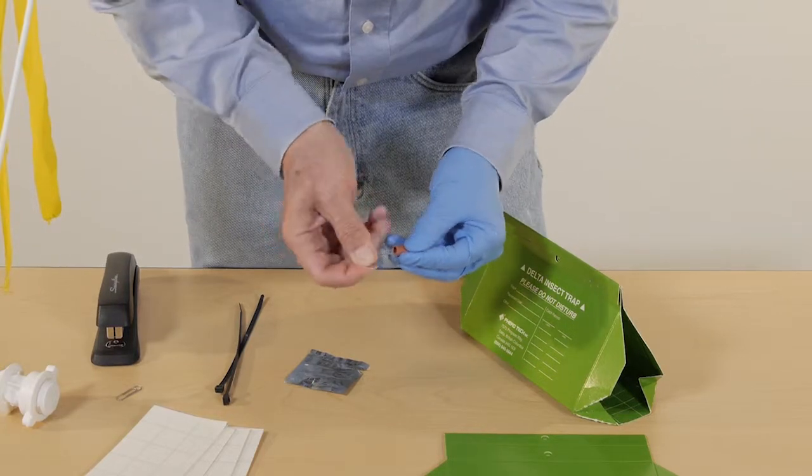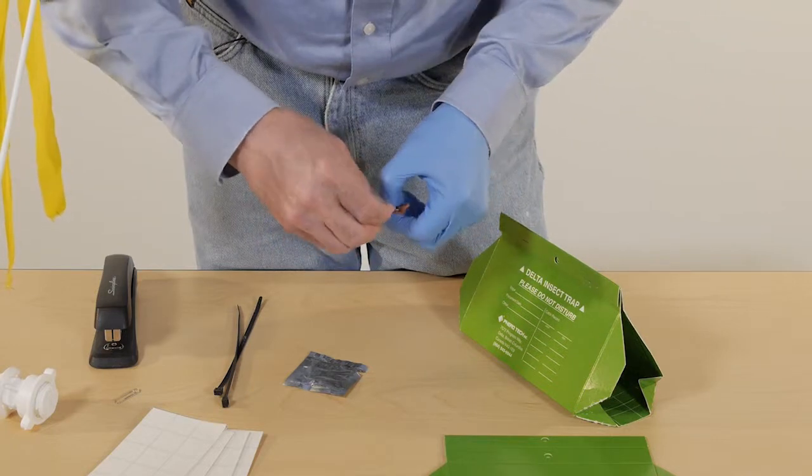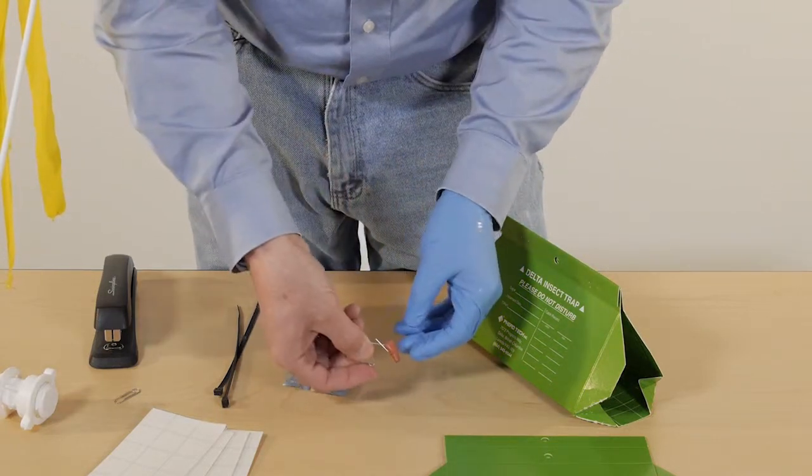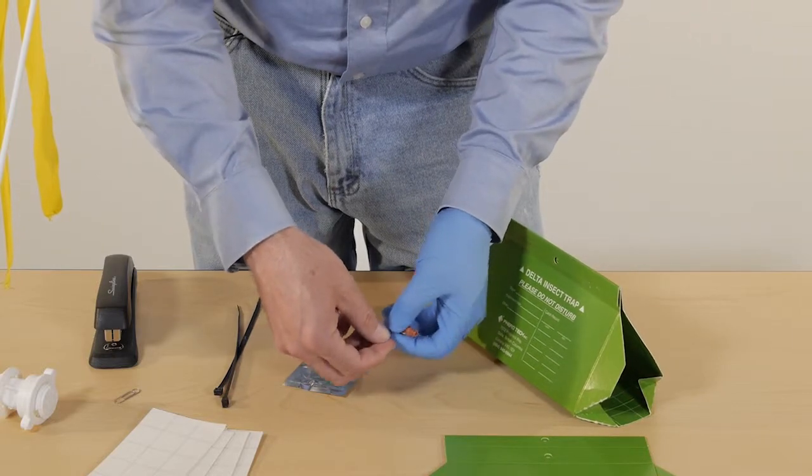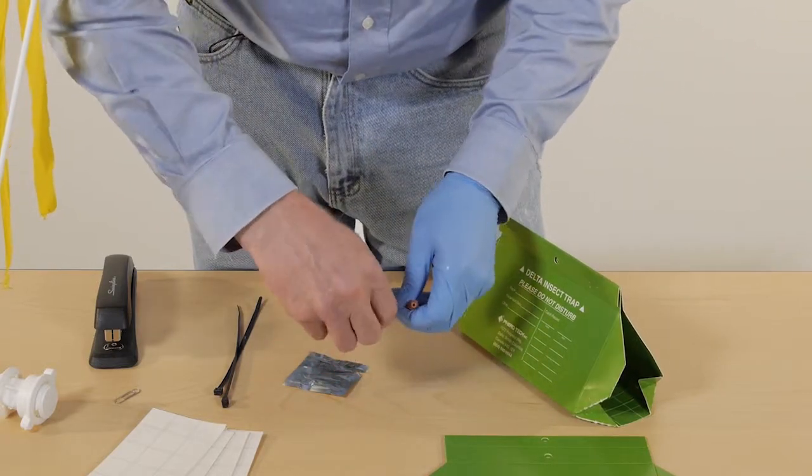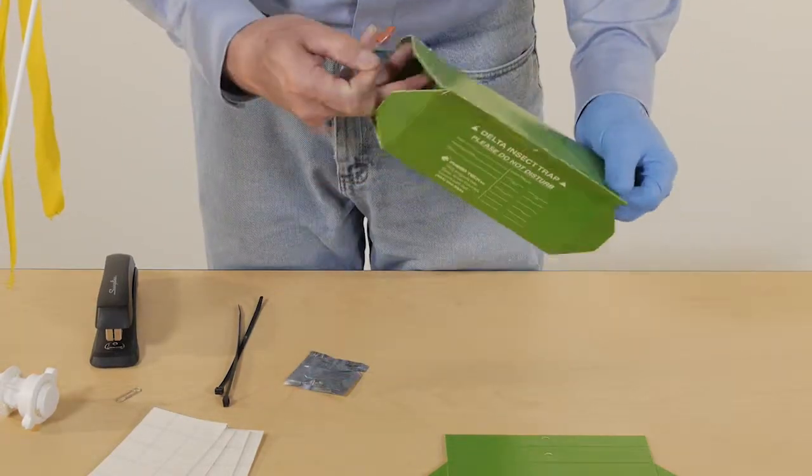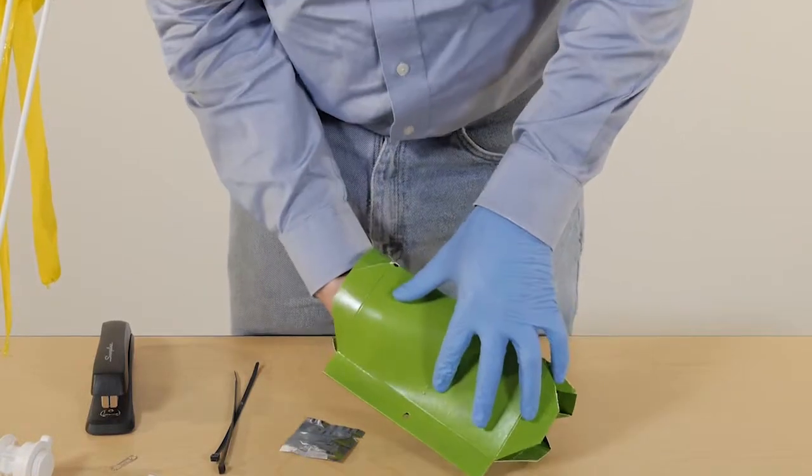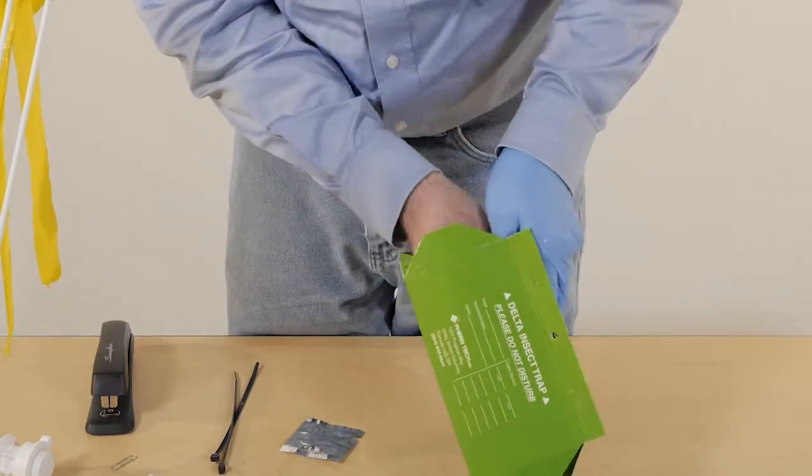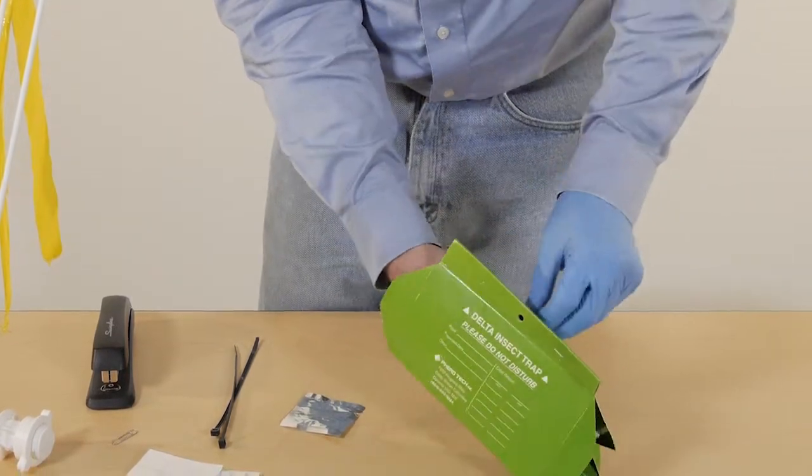Once you get that, then you just bend that back. That'll just keep that lure on that paper clip. Then we unbend this some more and we're going to just reach into the trap. We have little, we've put some little holes in the side of the trap.